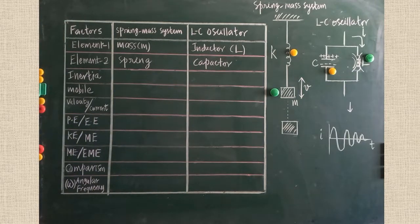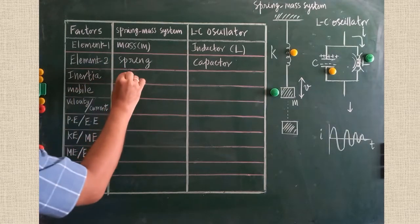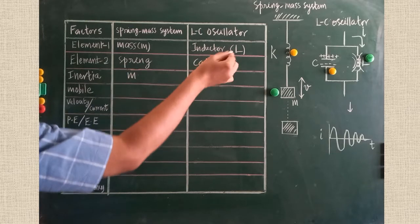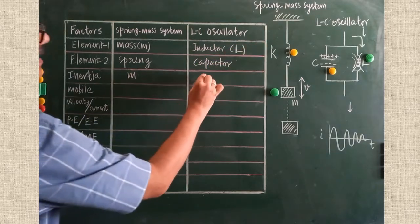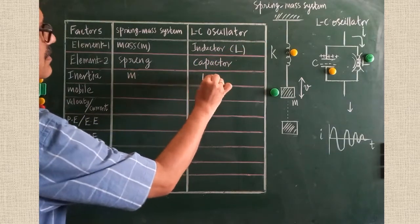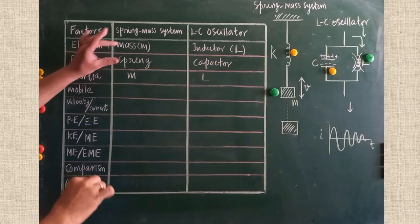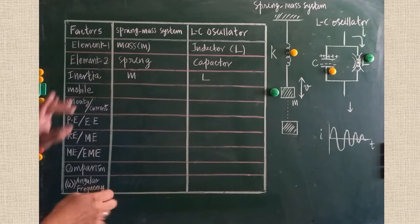Next is the inertial factor. The inertial factor in the spring-mass system is M. In the LC oscillator, the inertial factor is L, the inductance. Simply, these elements have been written; now we compare the remaining factors.